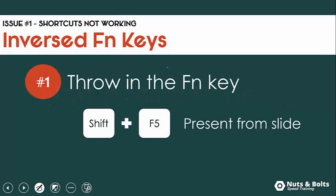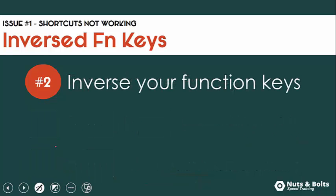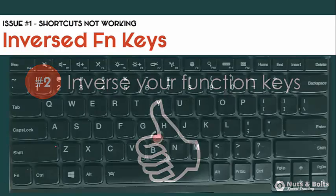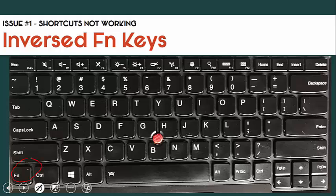So Shift+F5 to present from the current slide in PowerPoint becomes FN plus Shift plus F5, and fullscreen web browsing in Chrome or Internet Explorer becomes FN plus F11. You have to throw in this FN key, which is why I typically recommend inversing your function keys back to the default so you don't have to have that extra key. You basically need to restart your computer and set these function keys up top so that they're not the media keys — they're just the Excel, PowerPoint, fullscreen web browsing, PDF, and some of these other cool things.